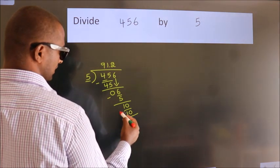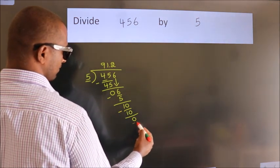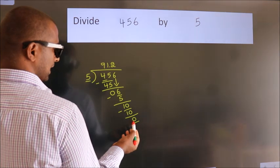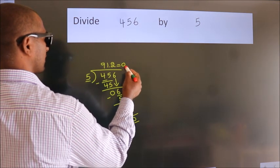Now, we subtract. We get 0. We got remainder 0. So, this is our quotient, 91.2.